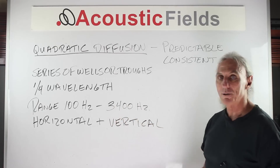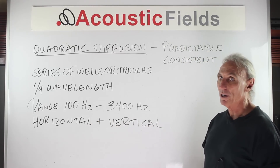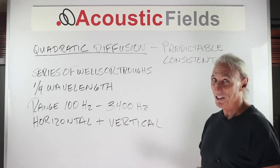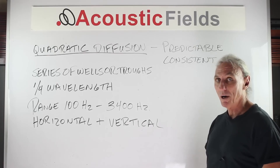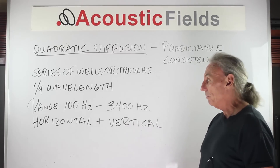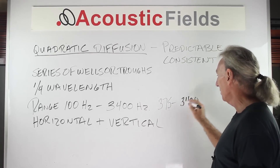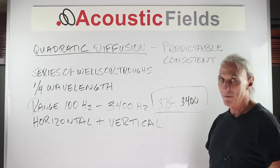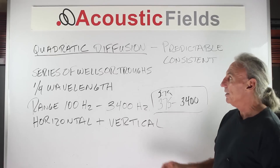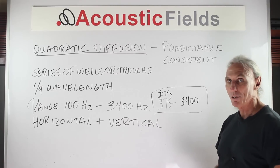Most quadratic diffusers range from 100 to 3,400 cycles. A 100 hertz wave is 11 feet long, so 25% of that following the quarter wavelength rule would be three feet — a really deep diffuser. If you can diffuse energy down to 100 cycles, that's really good. For most construction purposes, diffusers run from 275–375 to 3,400 cycles, right in that critical mid-range. The quadratic diffuser gives you predictable and consistent performance across that frequency response range.